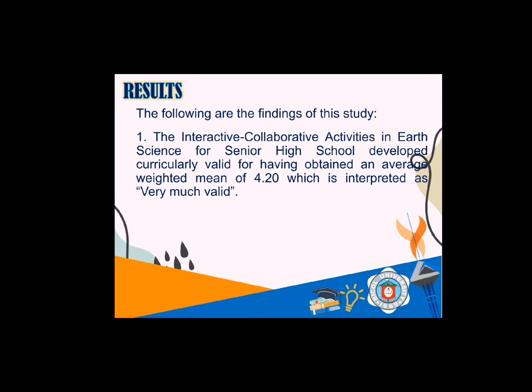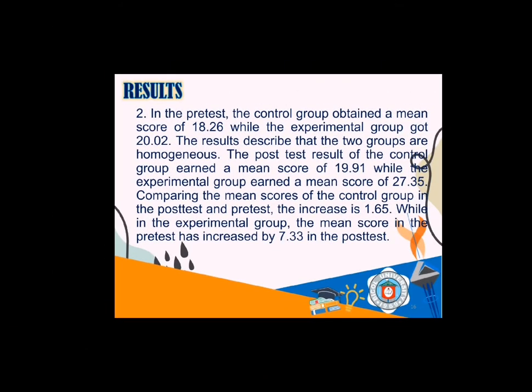For the second result, the pre-test and post-test results of the control group and experimental group: the pre-test was administered to both groups to find out the entry competence in earth science before any treatment is given. The control group was exposed to traditional teaching and the experimental group to interactive collaborative activities. The mean score of the control group in the pre-test is 18.26, while in the experimental group it's 20.02. In the post-test, the control group earned a mean score of 19.91, while the experimental group obtained a mean score of 27.35. Comparing pre-test and post-test, the control group increased by 1.56, while the experimental group increased by 7.44.